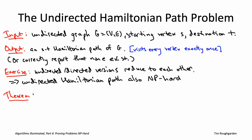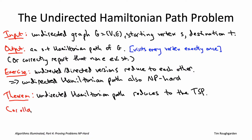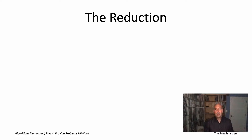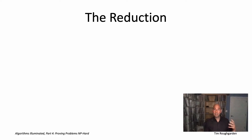The plan then will be to reduce this NP-hard problem — the undirected Hamiltonian path problem — to the traveling salesman problem. That'll prove the traveling salesman problem is also NP-hard. The reduction we have to come up with from undirected Hamiltonian path to TSP is more straightforward than the last couple of videos, since both problems deal with finding certain paths in an undirected graph.